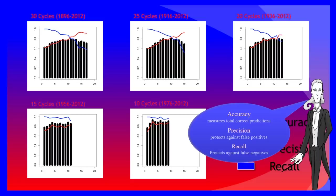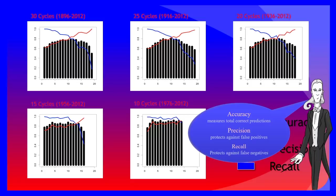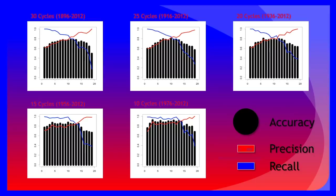In each iteration of the test, a stepwise algorithm was used to select the best subset of independent variables, as we adjusted the cutoff value and the historical reach of the input data. The optimum balance appears to occur with 15 election cycles and a cutoff of 0.65, yielding accuracy of approximately 83%, with precision and recall of approximately 84%.